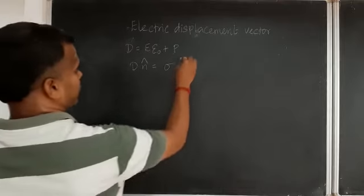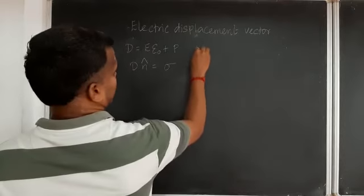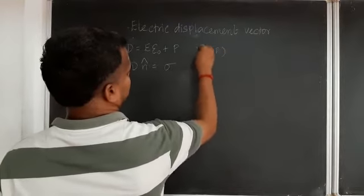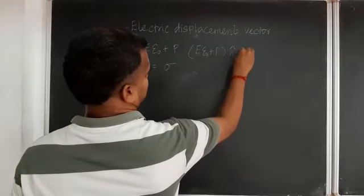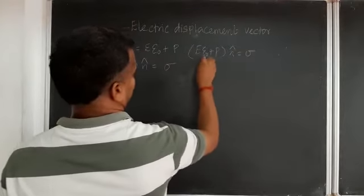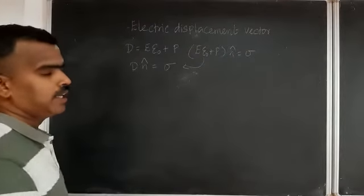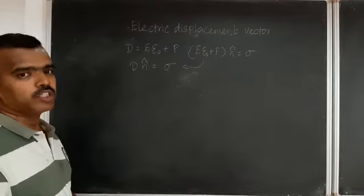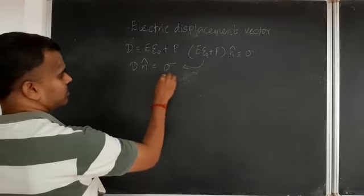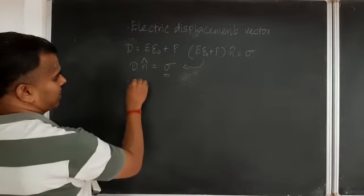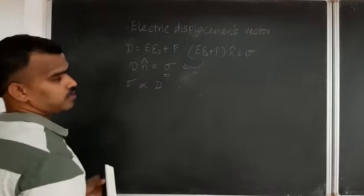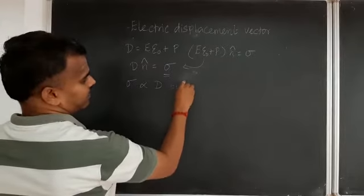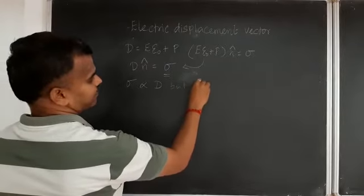So what we had written: (ε₀E + P)·n̂ = σ, from which we write D·n̂ = σ. This sigma is directly proportional to D, but not to E.